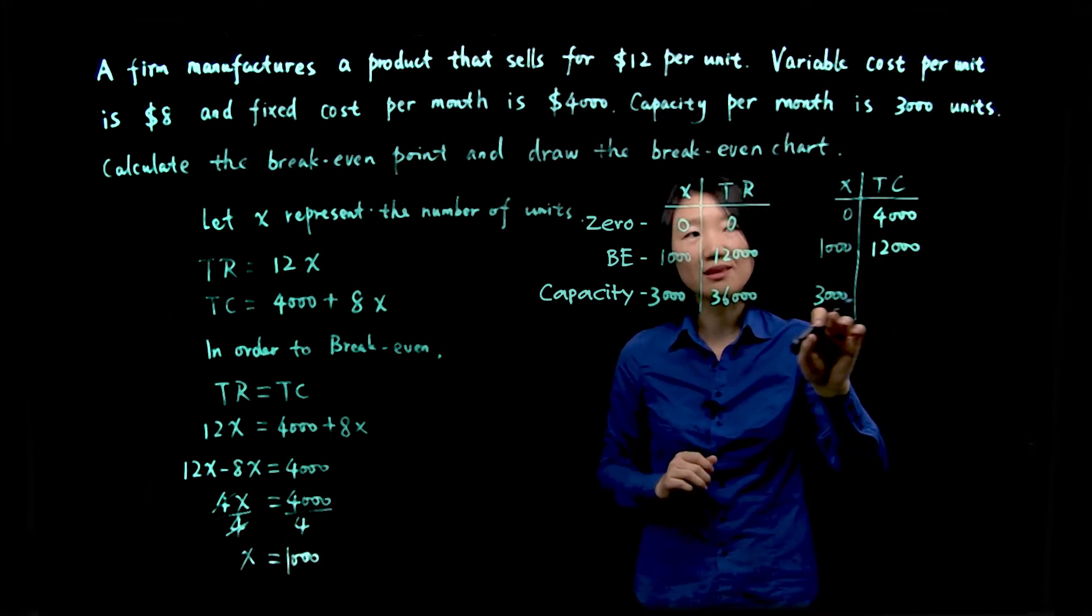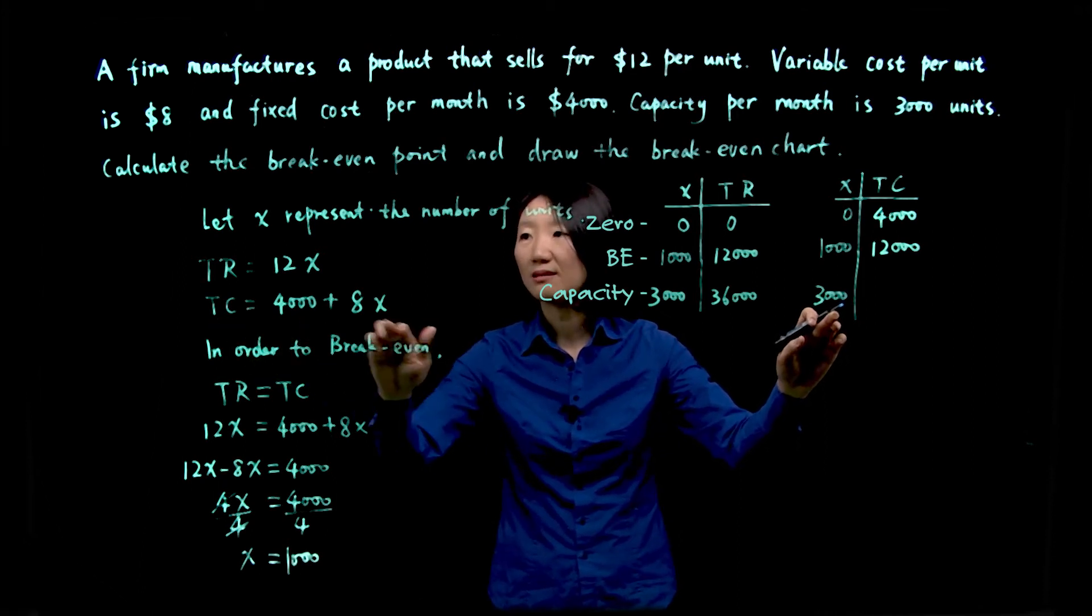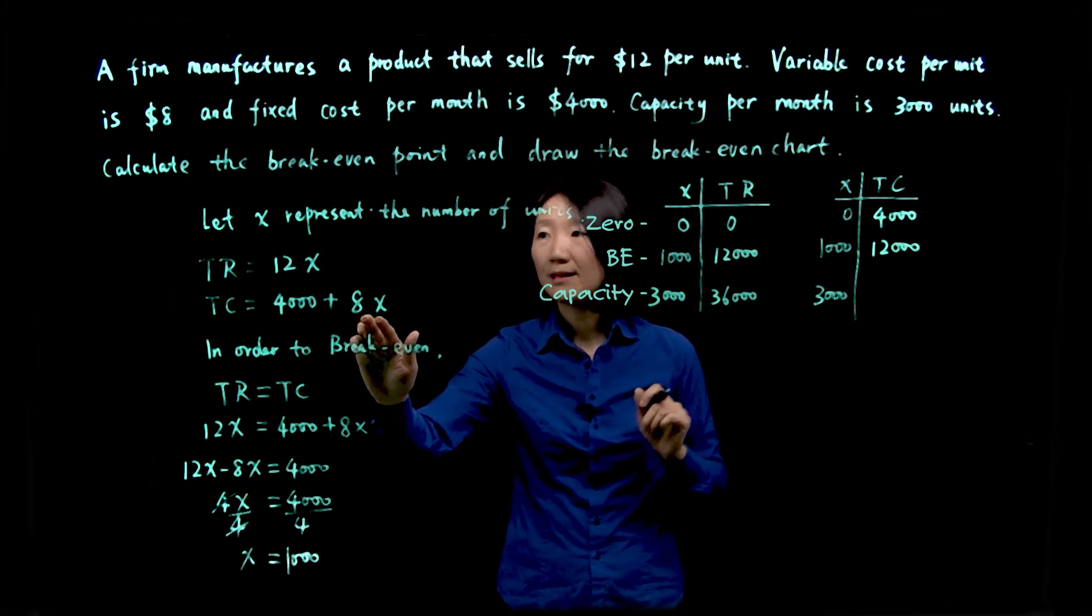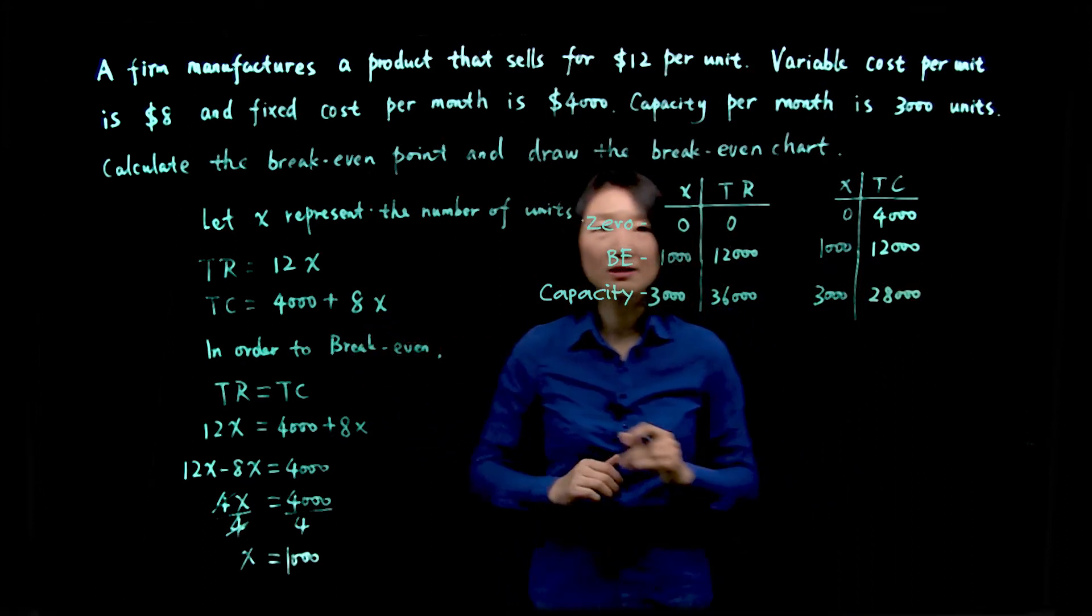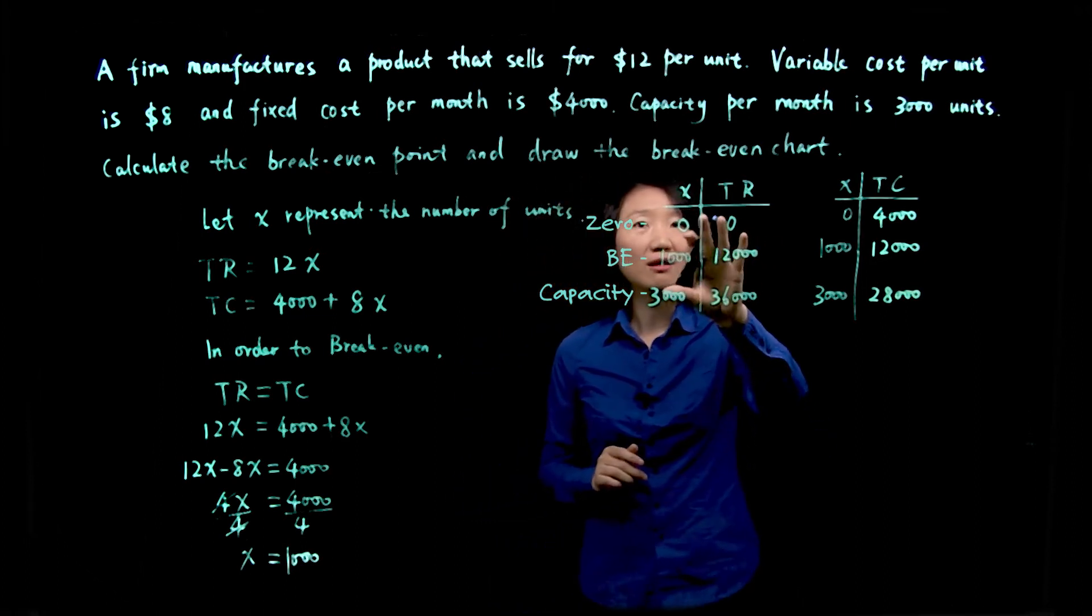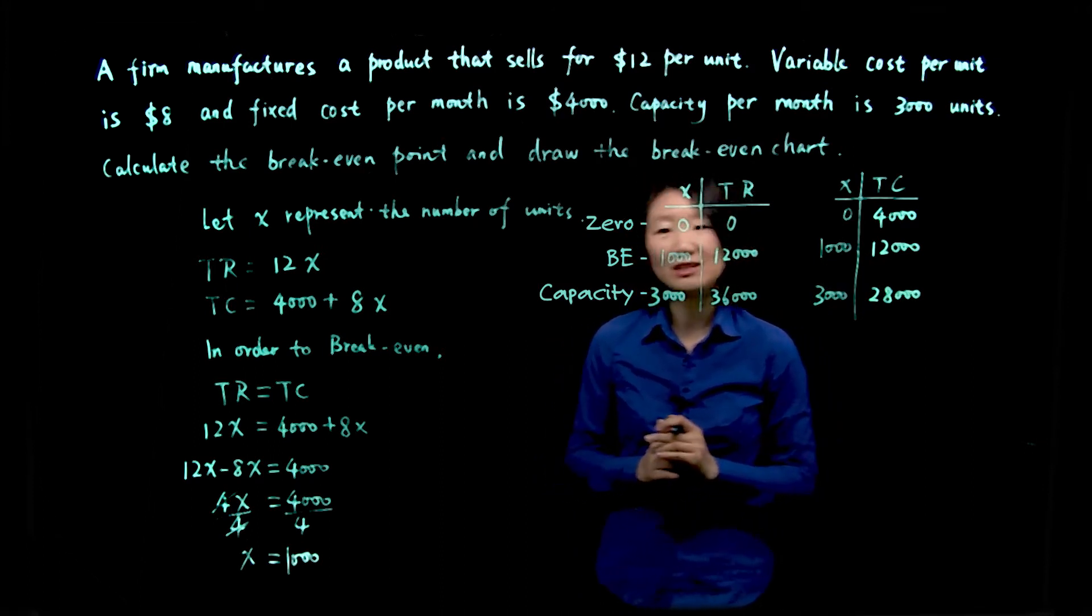Now how about the capacity, 3,000? We'll plug 3,000 into that function. So 4,000 plus 8 times 3,000, that'll give us 28,000. You can do the calculation with a calculator. So now with all these three points, special information, we're ready to draw the break-even chart.